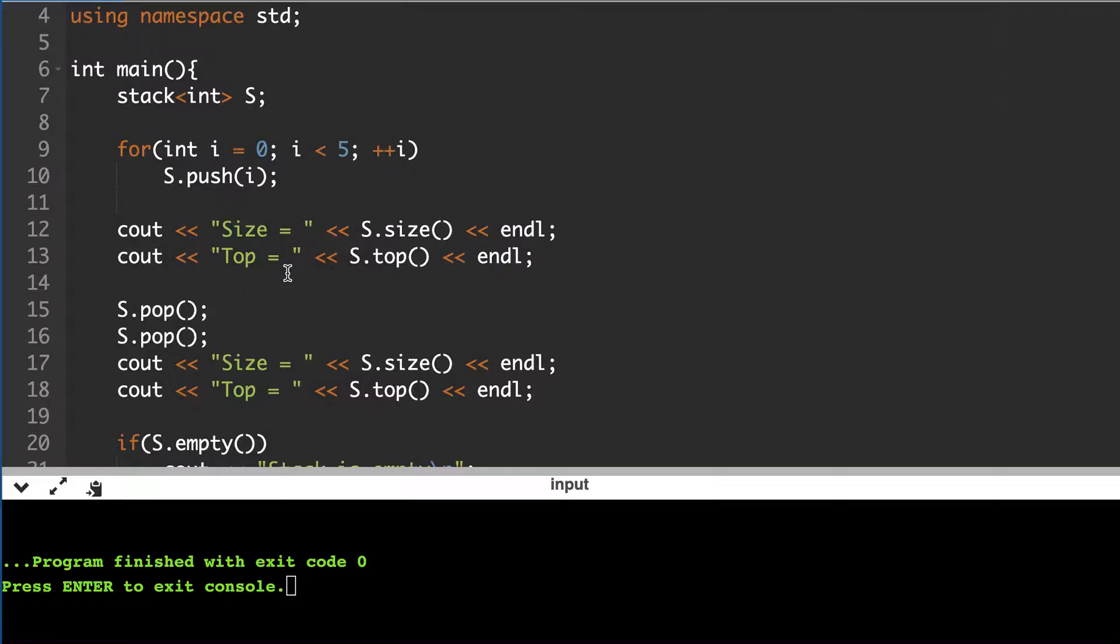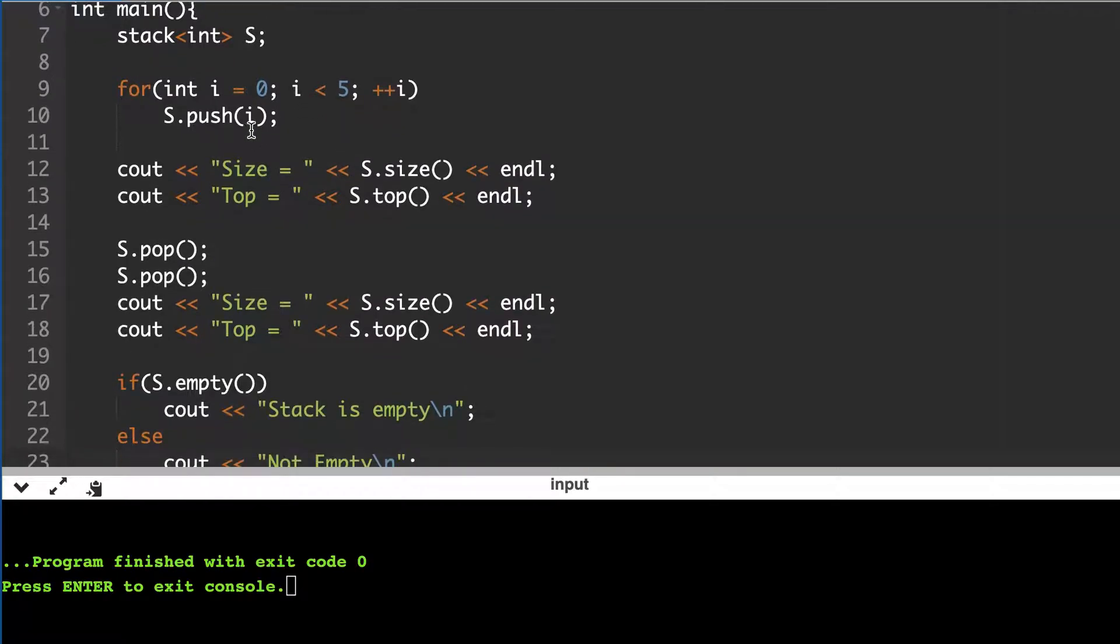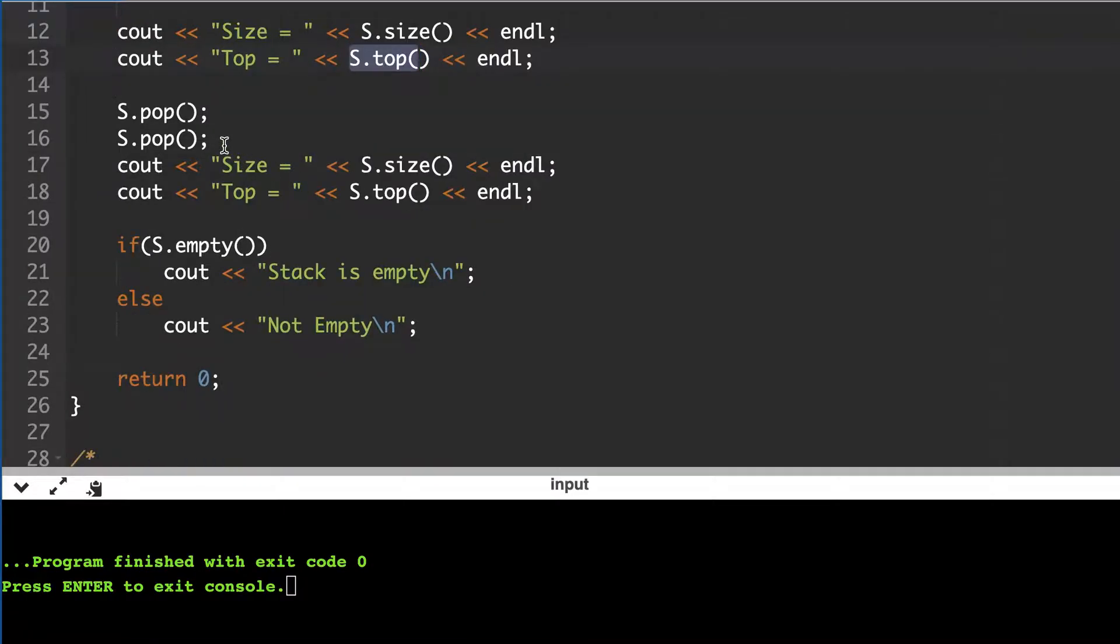So let's guess our output first then we will run it. Here we have pushed zero, one, two, three, four. Four is the one that was pushed last so that is at the top of the stack, so its size should be five. Top should be four. Then we pop two elements so four and three are popped. Now size should be three and top should be two, and then it should print not empty.